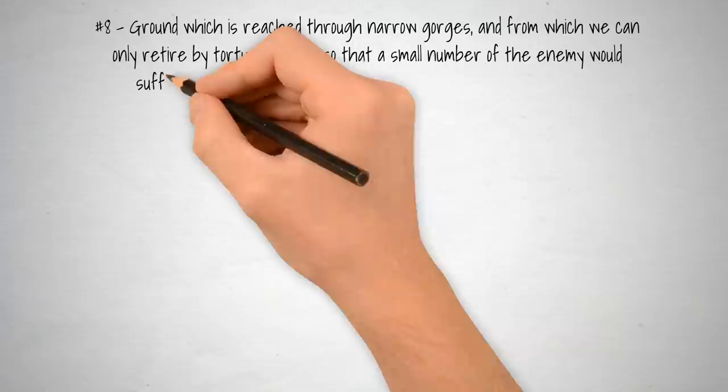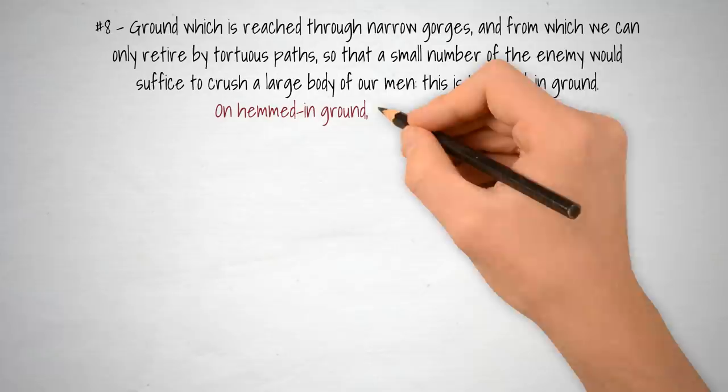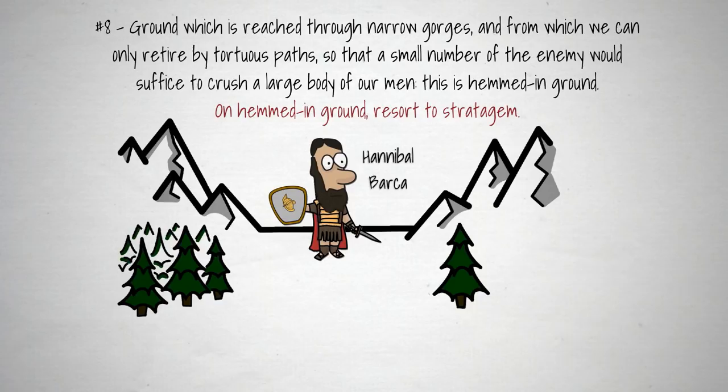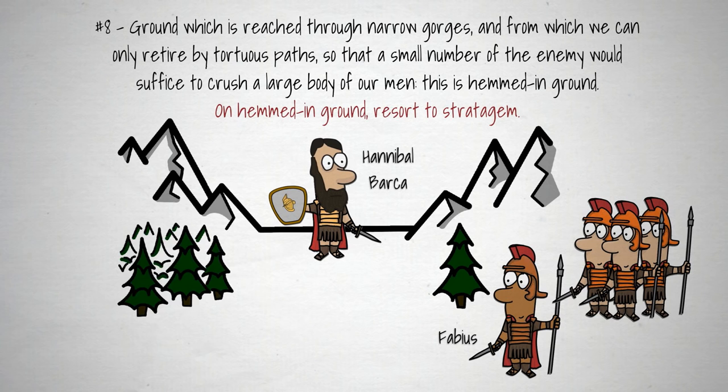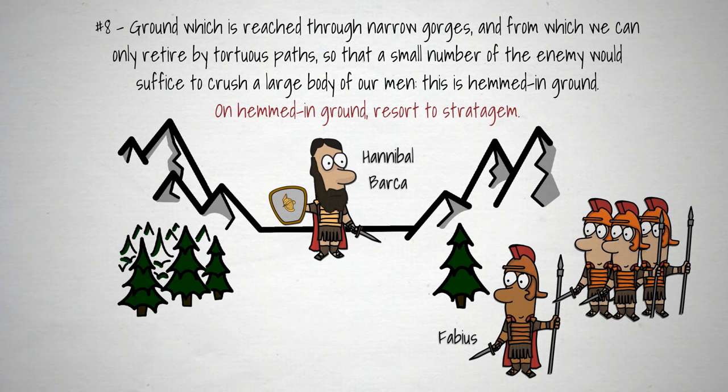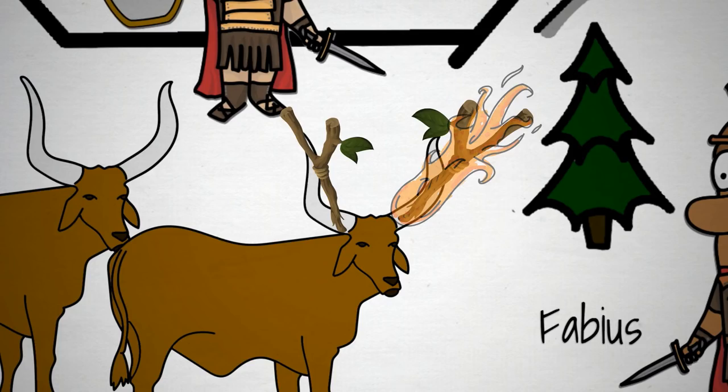When Hannibal was hemmed in on a road surrounded by mountains by his opponent Fabius, he devised a cunning strategic plan to escape. At nightfall, he tied bundles of twigs to the horns of 2,000 oxen and then set the twigs on fire. The bizarre show of lights moving extremely quickly down the road, which Fabius' men did not know were terrified oxen, caused them to panic and leave their position, allowing Hannibal and his troops to pass through unharmed.